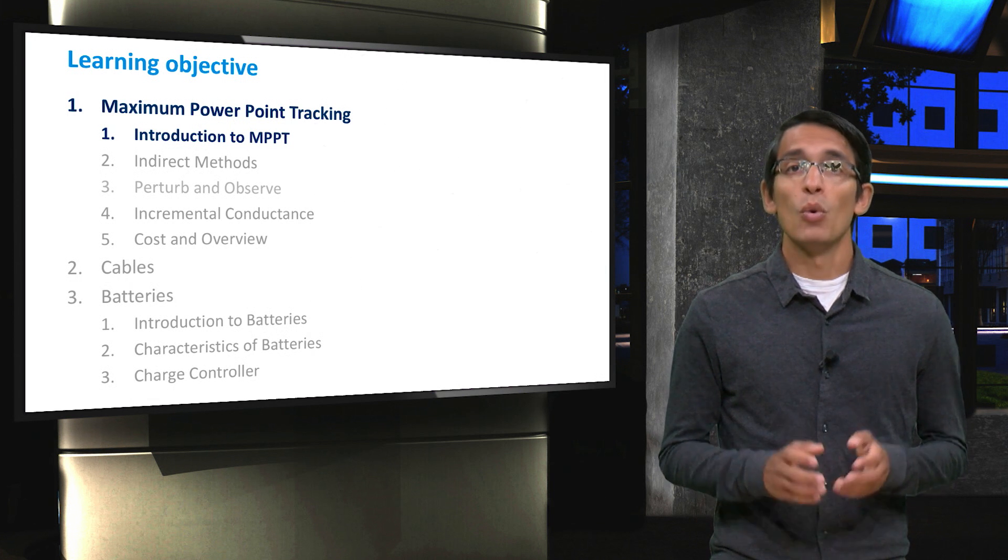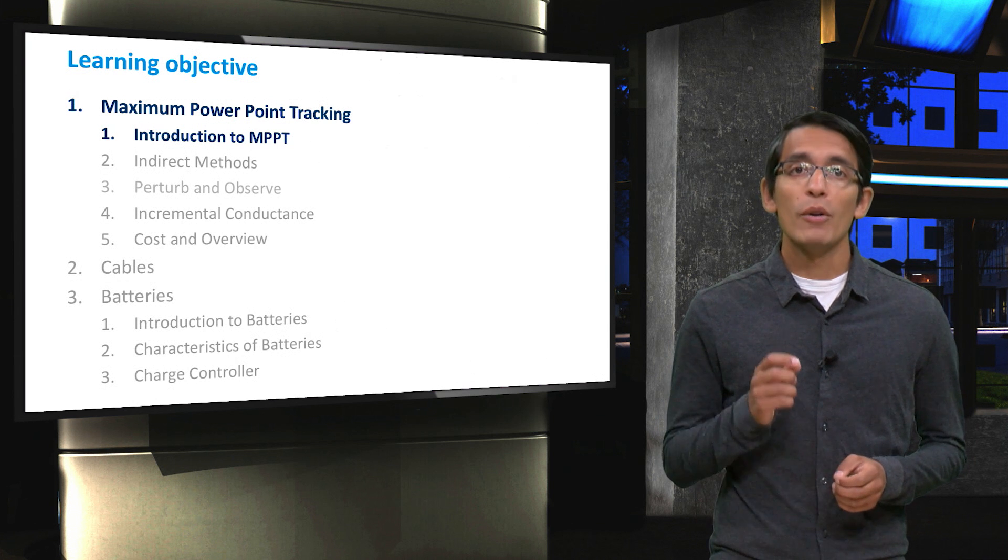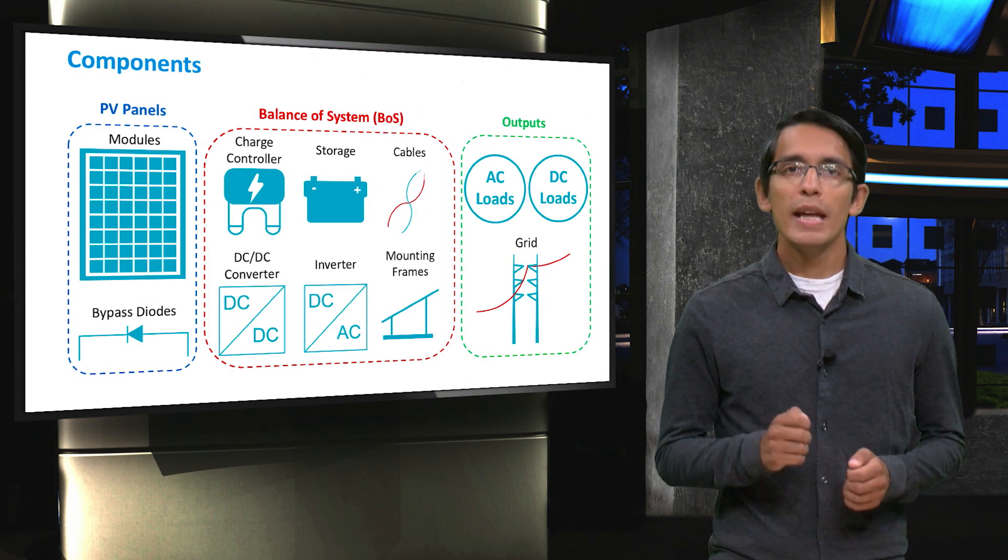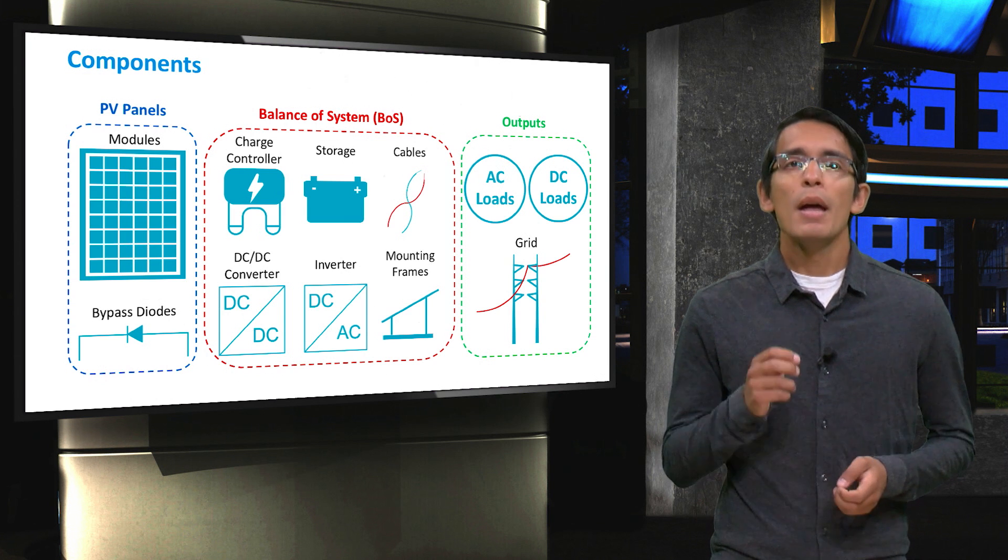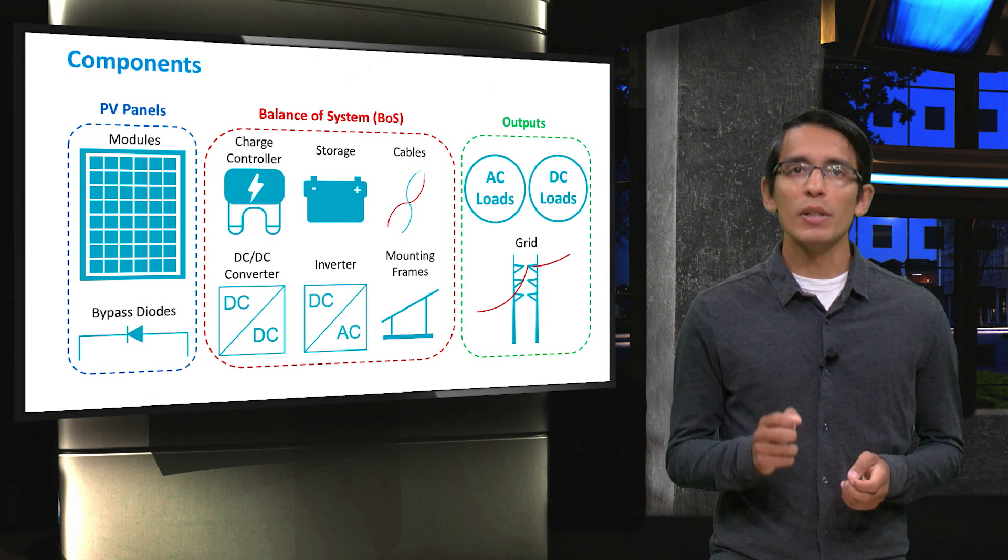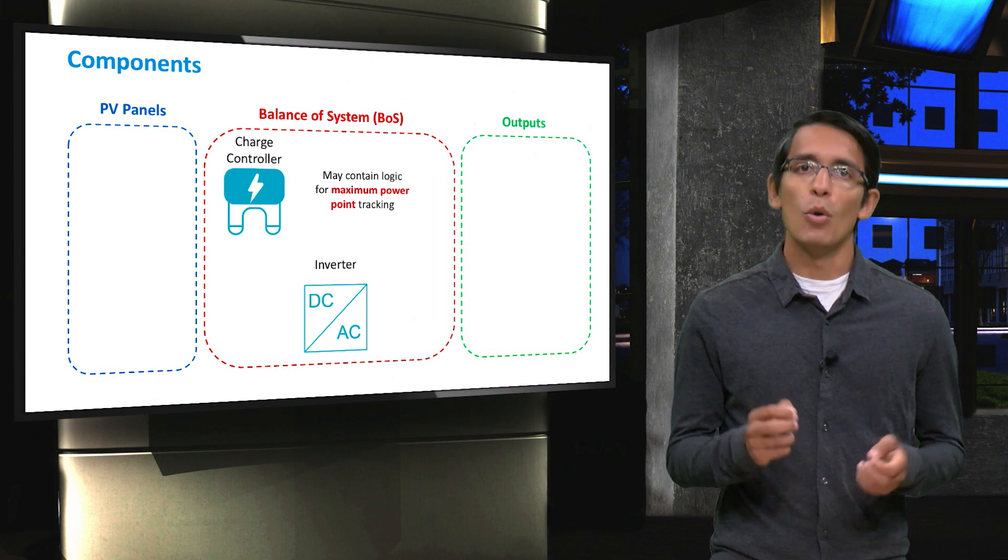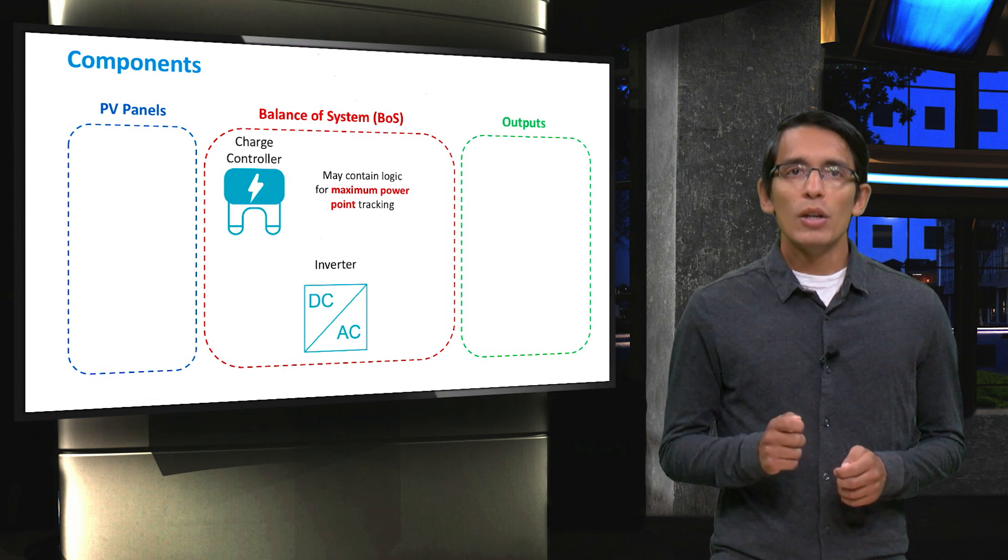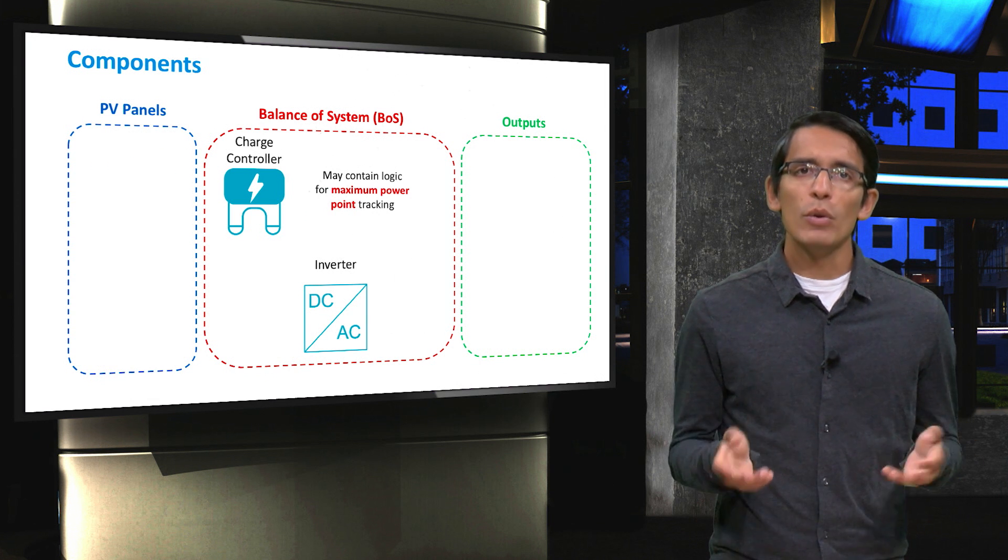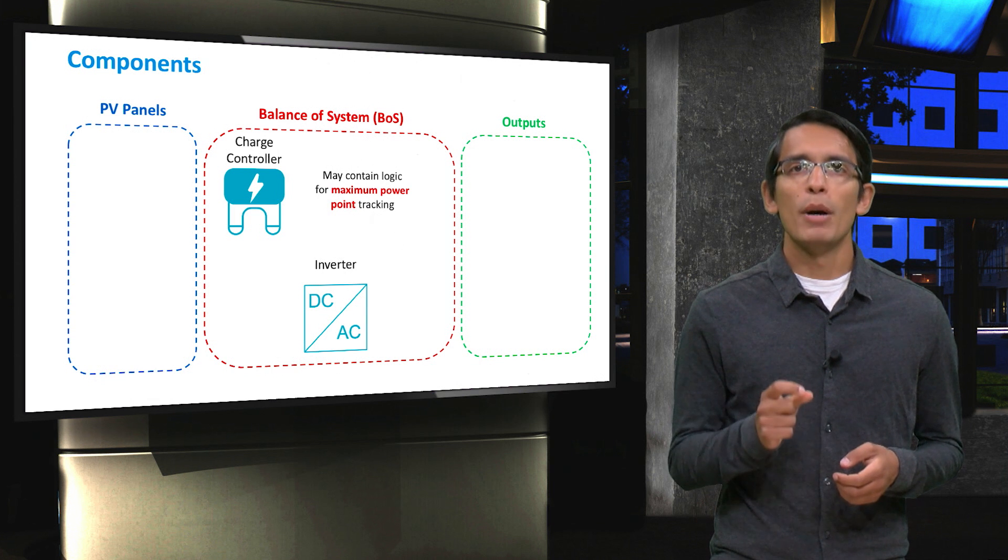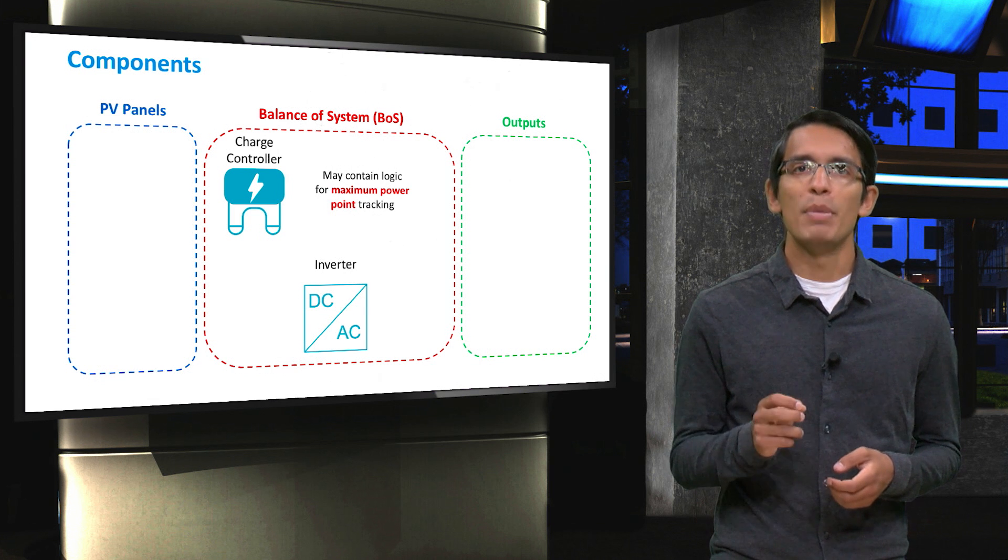But before we get into what and why, let's first talk about where. Here you see the familiar layout of components of a PV system. Maximum power point tracking usually happens in the charge controller or the inverter. Later I will explain how these components actually perform maximum power point tracking, but for now you can just remember that these are the components that contain the logic for MPPT.